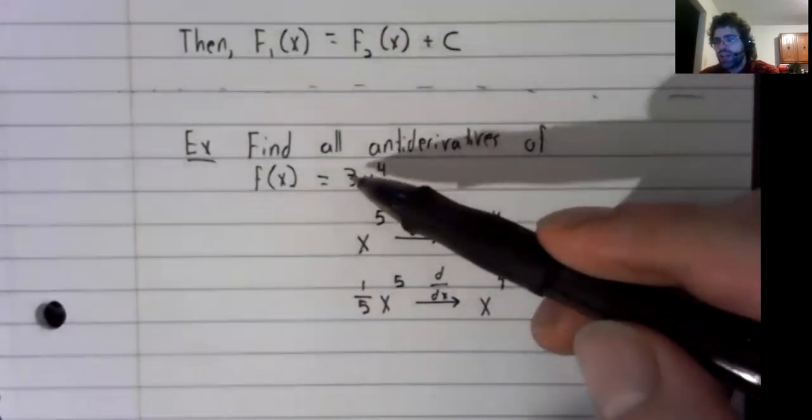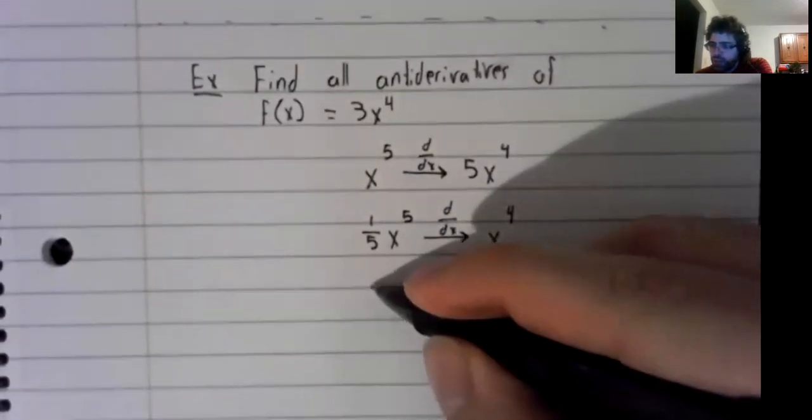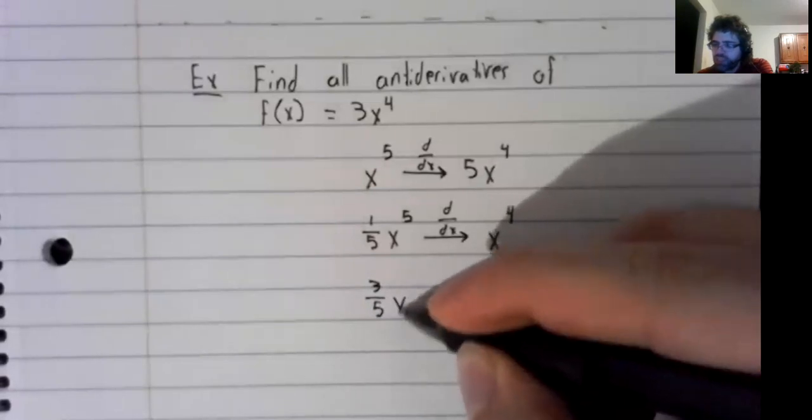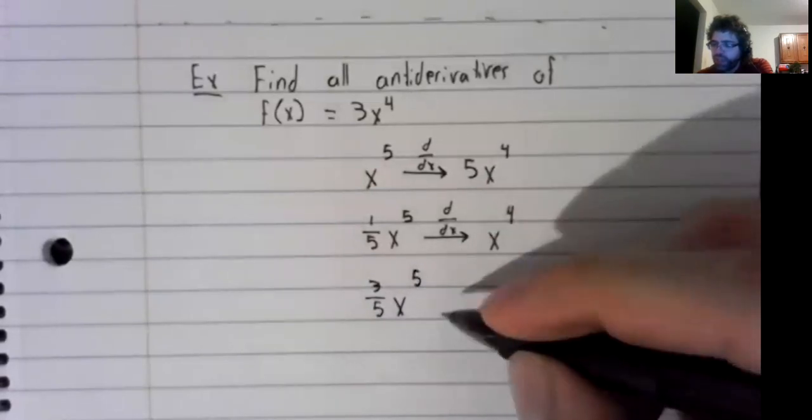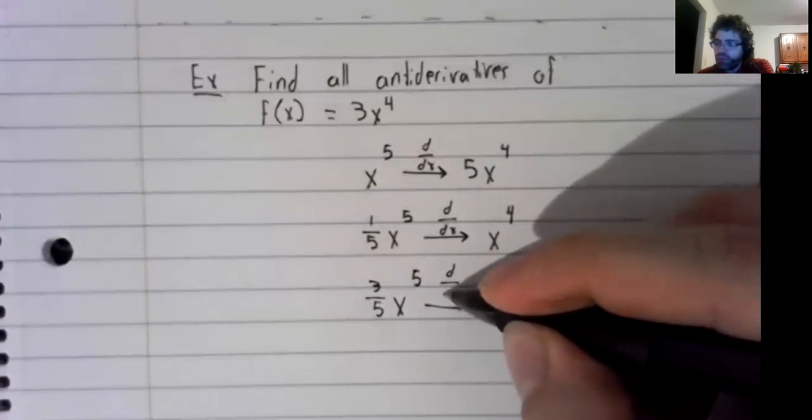Still not what you're looking for. We wanted a 3. Well, constant multiples just sit there. So if we put that 3 out front,